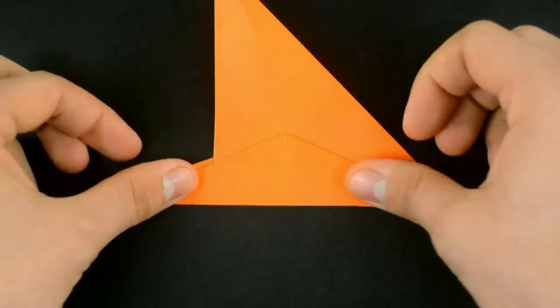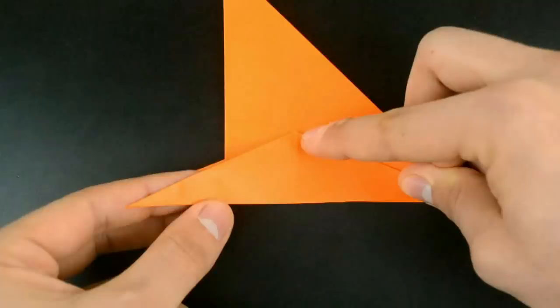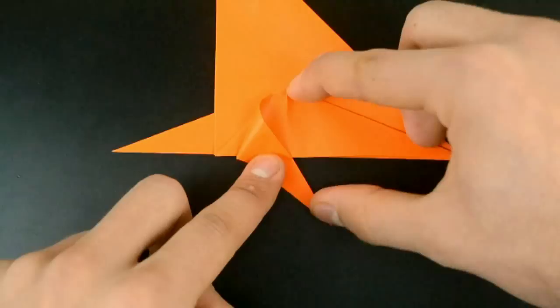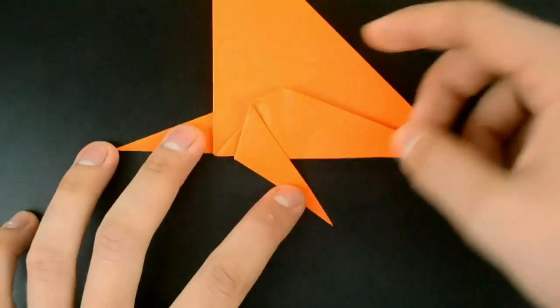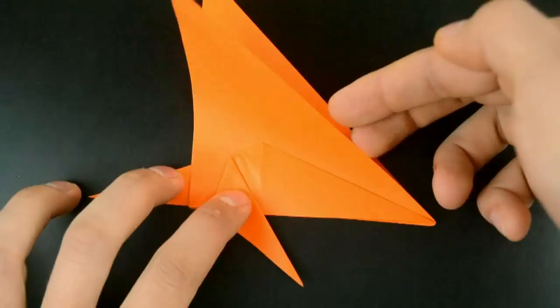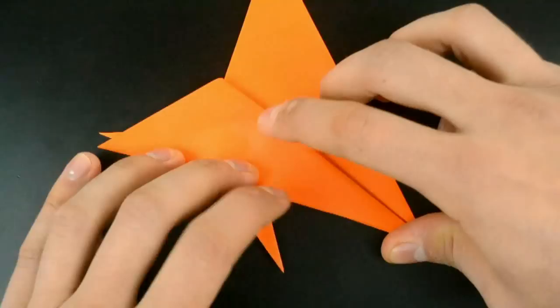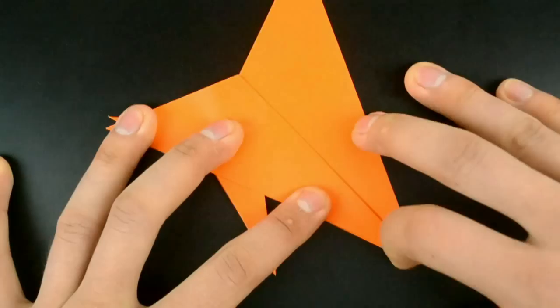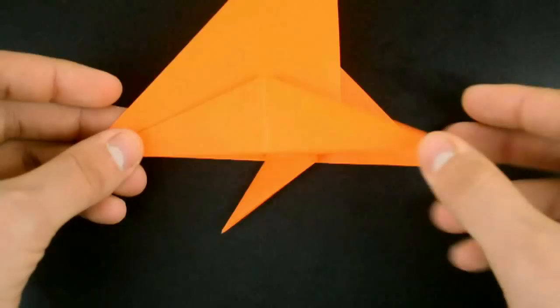Now fold this little flap here, this little tip down with some inclination, more or less like this. And now fold that flap over. Turn the paper over and repeat exactly the same using the previous one as a reference.